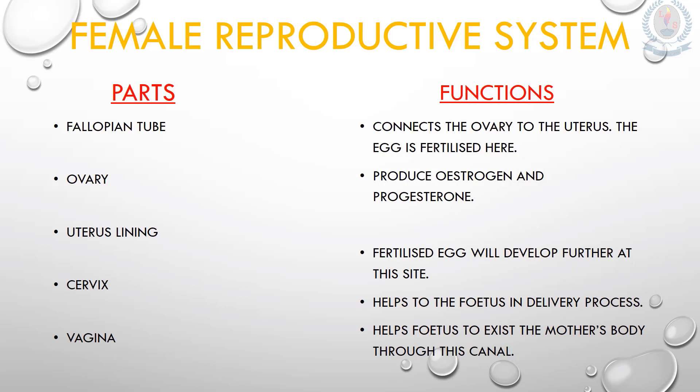The cervix consists of a ring of muscles at the lower end of the uterus. It becomes larger during birth so that the fetus can be delivered. The vagina, or birth canal, is a muscular tube which joins the cervix to the outside of the body. The fetus exits the mother's body through this canal, and semen is deposited here during sexual intercourse.